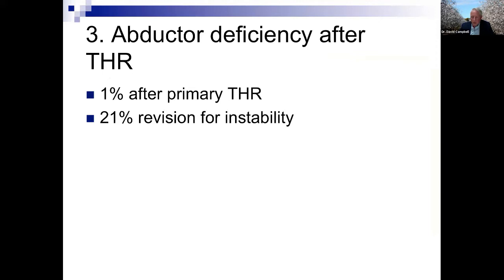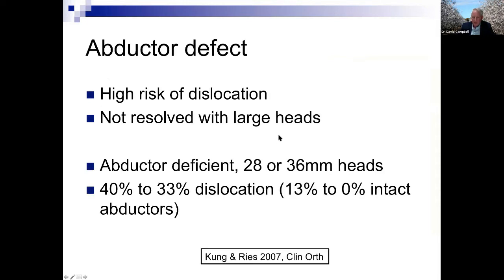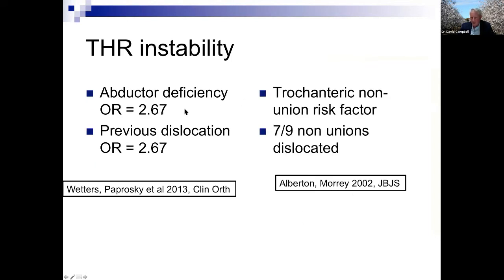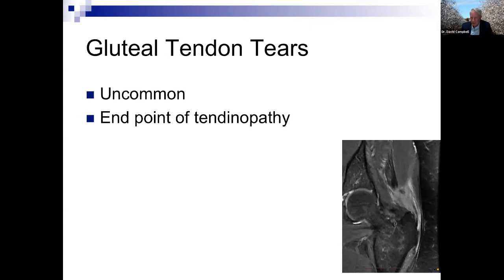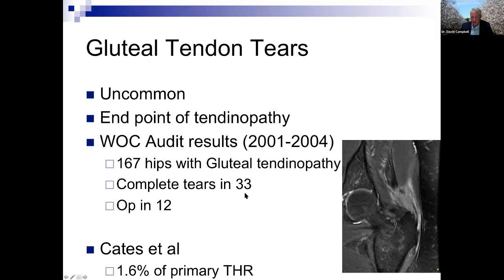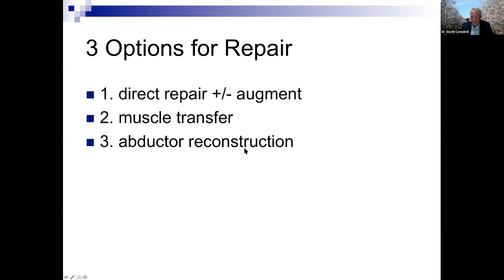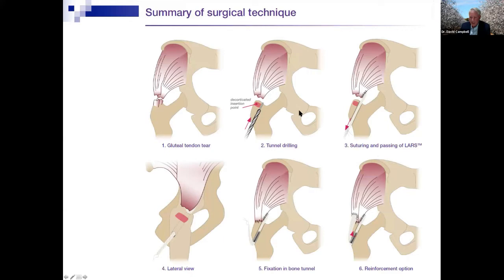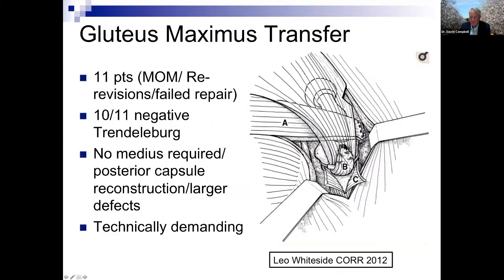Briefly on abductor deficiency in hip replacement: it affects about 1% of primaries and one-fifth of revisions, representing a significant problem. It carries a high dislocation risk not resolved by larger heads or constrained heads. Abductor deficiency confers a 2.5 times increased instability risk. It's uncommon but impactful. Management includes repair, occasional augmentation, muscle transfers, and very rarely ductal reconstruction. We use LARS augmentation occasionally — I'm about to perform my first one tomorrow — and it may have a role in post-traumatic situations.